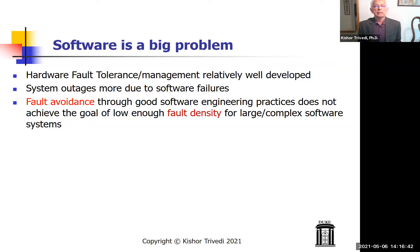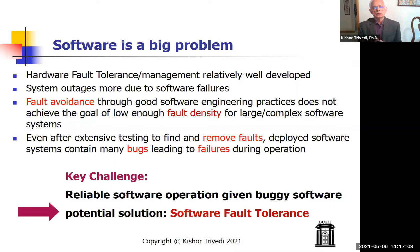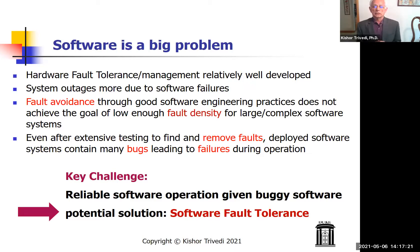The next technique advocated is fault removal — you find and fix bugs through testing. But in spite of all the testing we do, the number of bugs in software during operation is still reasonably large. So we have buggy software whether we like it or not. The key challenge then is to have reliable software operation given that we have software with a lot of bugs. The potential solution is the third means: software fault tolerance.